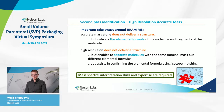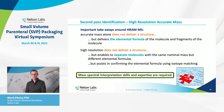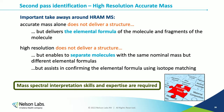Important takeaways about high-resolution accurate mass: the accurate mass alone does not deliver a structure, but it delivers the elemental formula of the molecule or its fragments. High resolution does not deliver the structure either, but it enables separation of molecules with closely related masses and assists in confirming the elemental formula by evaluating the isotope pattern. In the end, it requires mass spectral interpretation skills and expertise to propose a structure based on all the mass spec information.